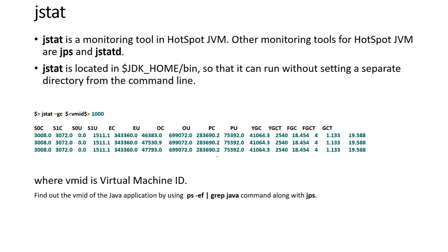We tried the jstat command and saw what type of information it provides. For example: S0C is survivor 0 capacity, S1C is survivor 1 capacity, S0U is survivor 0 used — U is used and C is for capacity. You can use these commands directly on the server if you are not allowed to run any monitoring tool on production, since these are read-only commands. It is also important that you understand what the output means.